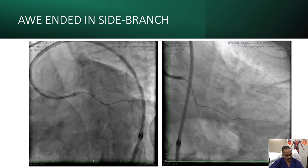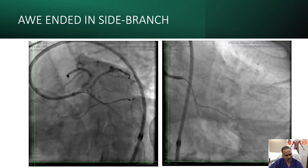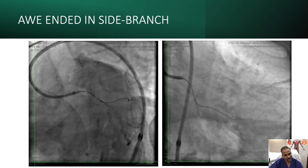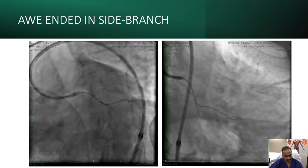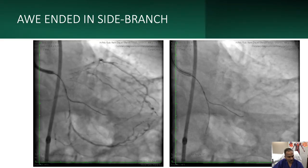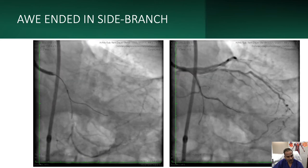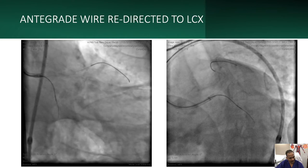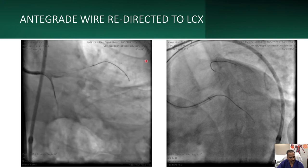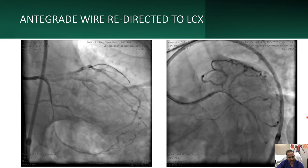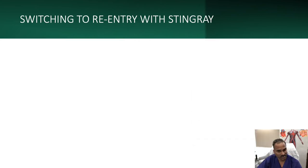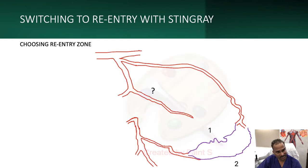Due to the patient's ischemia, I wanted to complete the case fast. The wire subsequently went into a side branch. Since I was unsure whether it had achieved intimal entry and the wire had gone into a side branch, the next challenge was redirecting it into the main LCX. We performed redirection using two orthogonal views. The wire came into the LCX but appeared clearly sub-intimal, so we decided to switch to Stingray re-entry.